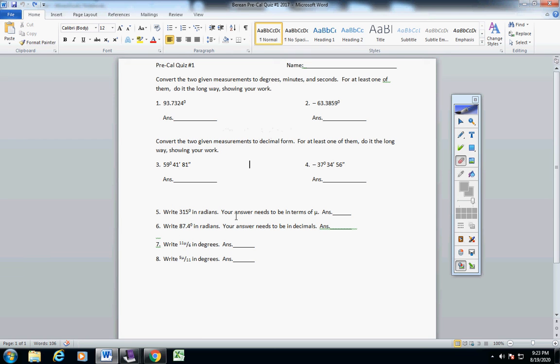And then five and six, write these in radians. This little symbol right here is supposed to be a pi symbol. It's not, and I'm sorry, but one of your answers needs to be in terms of pi, and the other answer can be in decimals.